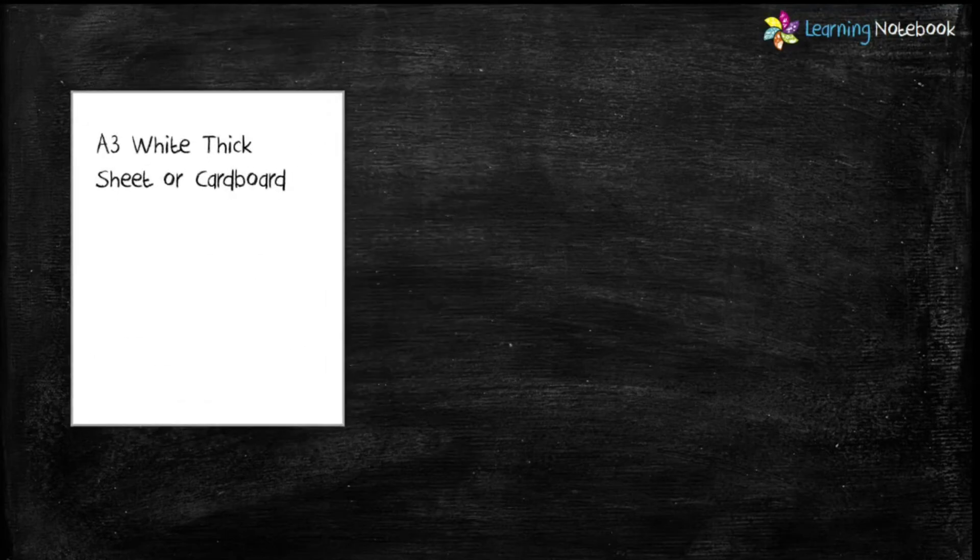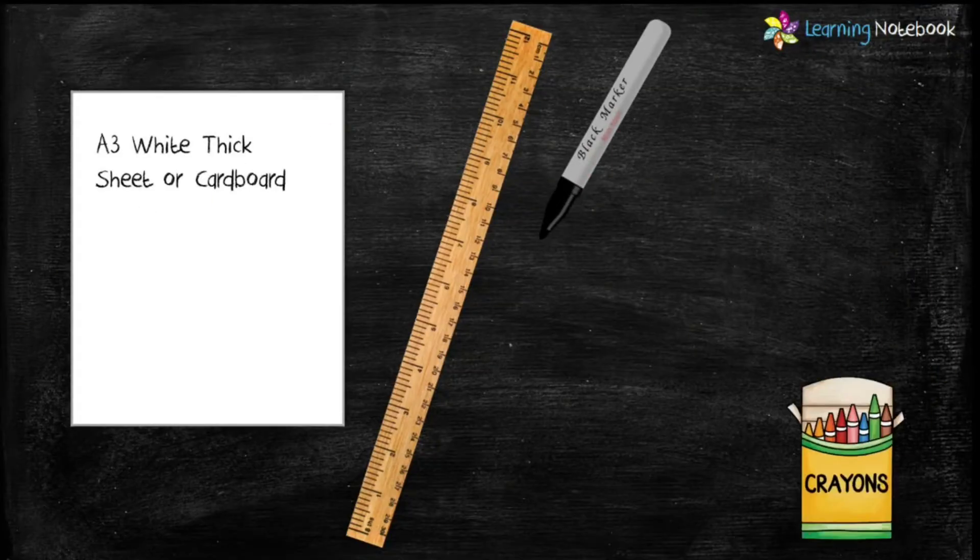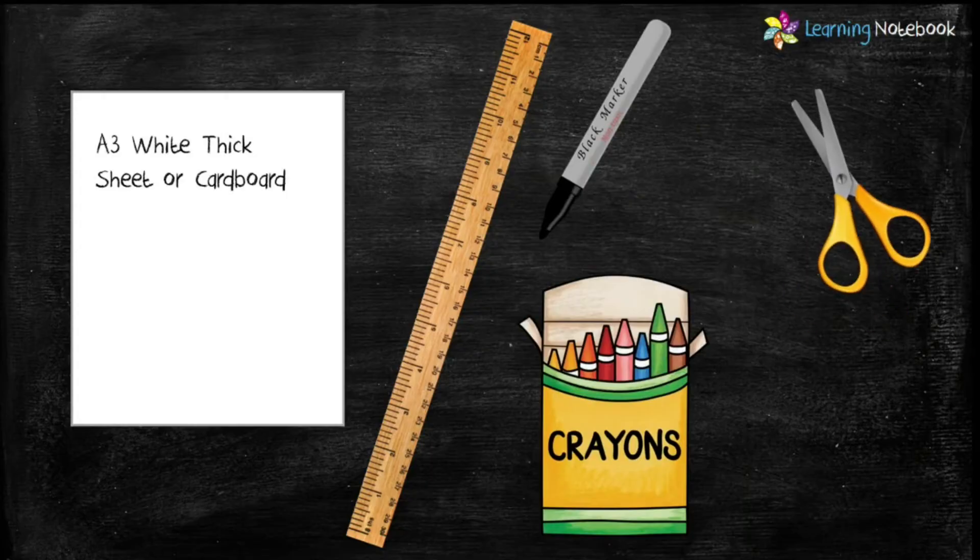For this activity, we need one A3 white thick sheet or a cardboard, a ruler, a marker pen, a few crayons, a pair of scissors, and a compass.